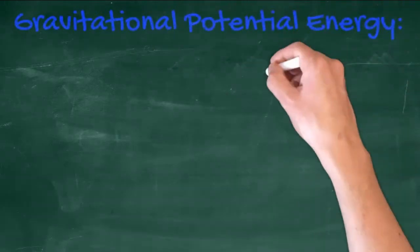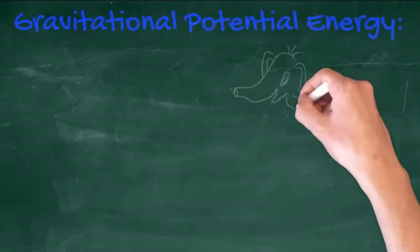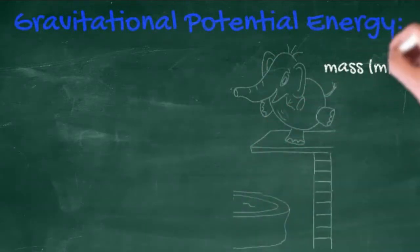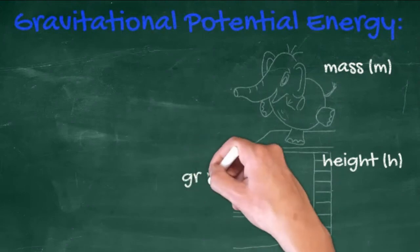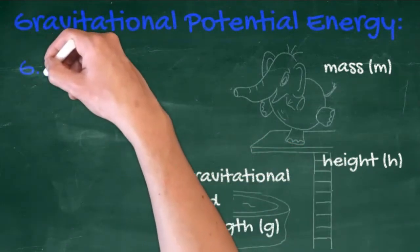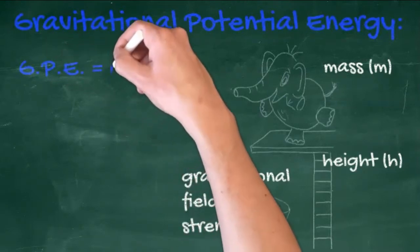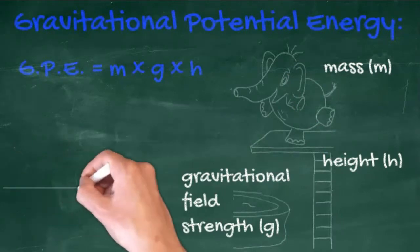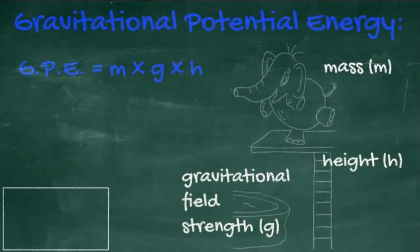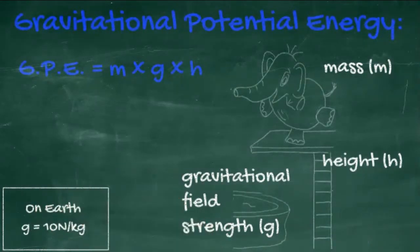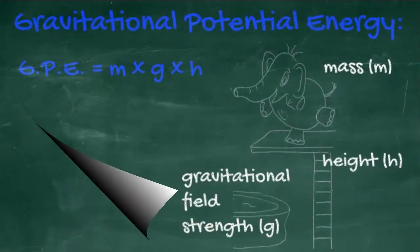Gravitational Potential Energy, GPE, is mostly about energy gained by height. The higher something is, the greater its gravitational potential. And the calculation is GPE equals mass times gravitational field strength times height. And on Earth, the gravitational field strength is 10 newtons per kilogram. We should probably talk about change in height and change in GPE.